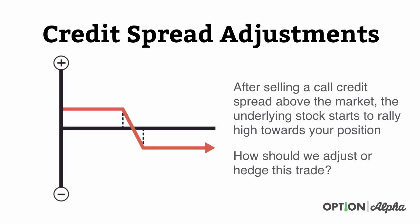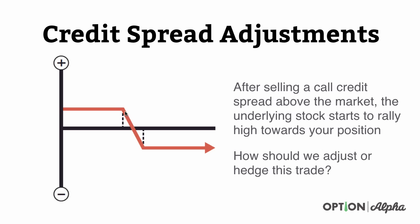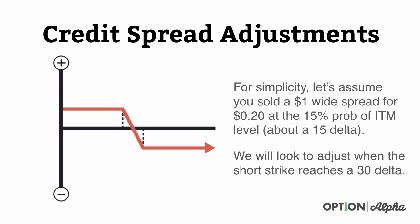Before we get into some case studies, let's go through a couple examples on how we can make these adjustments at a high level. When you're dealing with credit spreads, after selling a call credit spread above the market — say the stock is trading at 50, you'd sell the 55 calls and buy the 60 calls — the question becomes how do you adjust this type of trade? It's already a risk defined trade. For simplicity's sake, let's assume that you sold a $1 wide spread for $0.20 at a 15% probability of being in the money. That's about a 15 delta on the short strike.